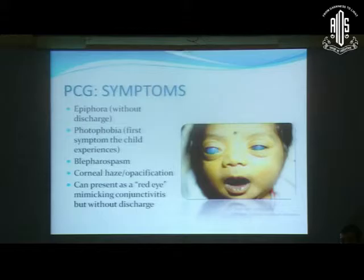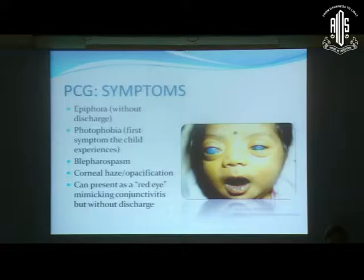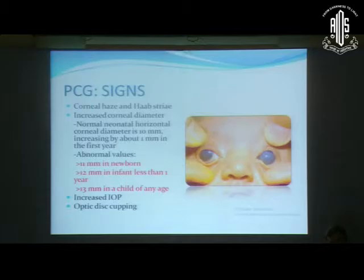Primary congenital glaucoma is the condition that should always be excluded because of its obvious implications on the visual potential of the child. The primary symptoms are epiphora without discharge — which distinguishes it from congenital nasolacrimal duct obstruction — photophobia, which is the first symptom the child experiences, blepharospasm, and corneal haze. Sometimes, although rarely, it can present as a red eye mimicking conjunctivitis, but again without discharge.